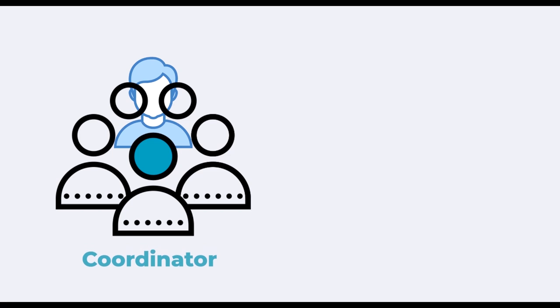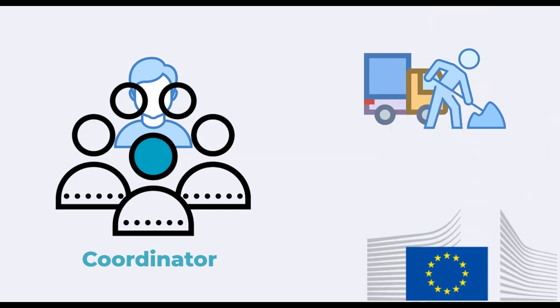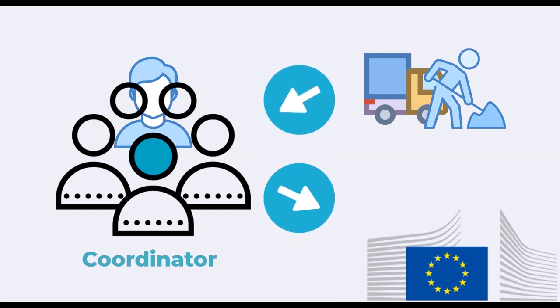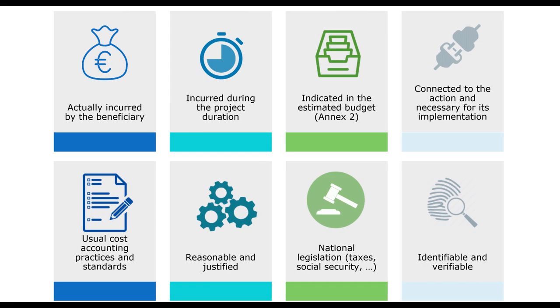The consortium of a Horizon 2020 project is usually composed of various partners led by a coordinator. However, there might also be additional members to the project, the so-called third parties. This chapter specifies the types of third parties that may be involved in Horizon 2020 projects and their main characteristics. The most important feature of third parties is that they do not sign grant agreements and therefore are not full-fledged members of the project consortium. Third parties are connected to a project beneficiary who usually remains responsible for them. The costs of third parties must comply with the same general and specific eligibility criteria as the costs of project beneficiaries, as defined in Article 6 of the Grant Agreement.